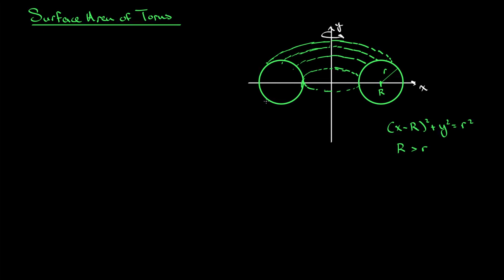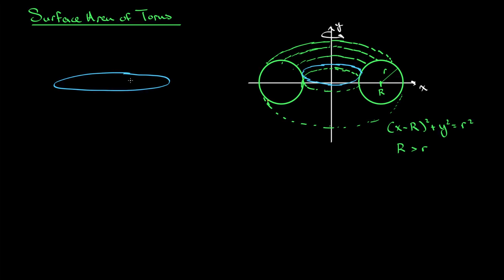So we get this donut shape, and we want to find the surface area of this donut. This kind of looks like there's only half of it here — it's coming out towards you. So we have a full donut here, and we want to find its surface area. This is going to be a pretty standard thing. If you want to try to solve this on your own, please pause the video and give that a try.